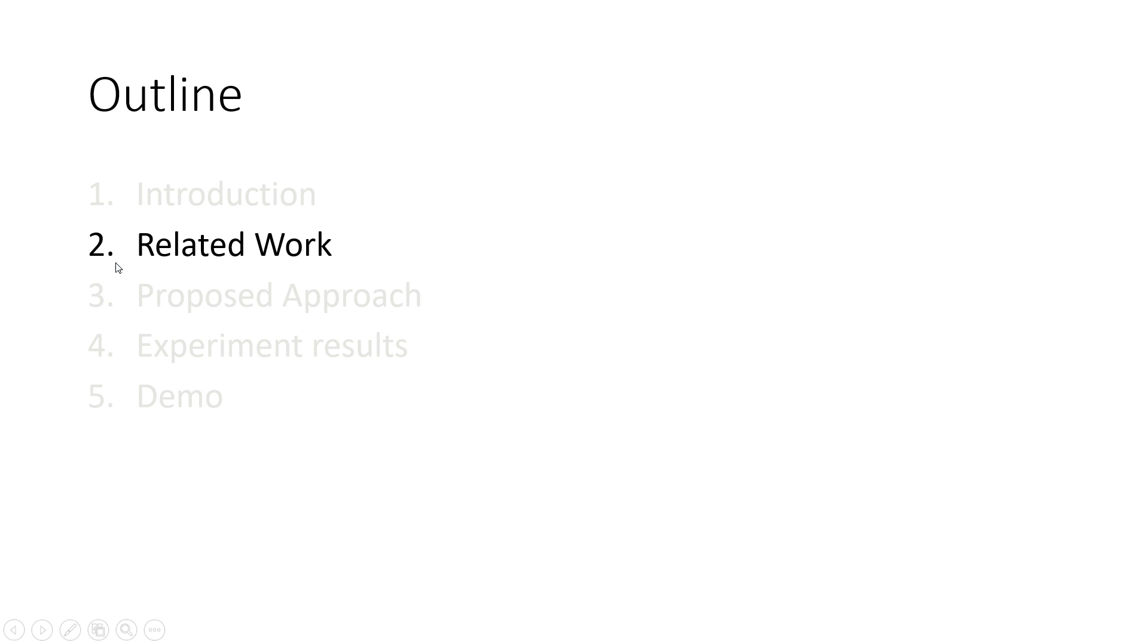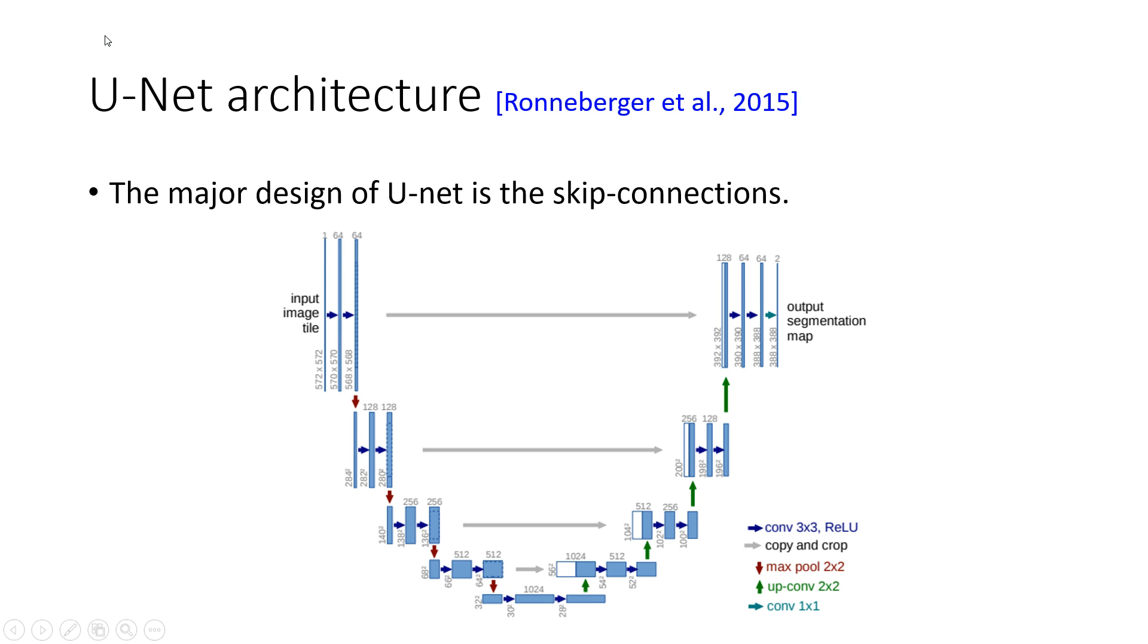I will introduce some related work which is used in our architecture. First, the U-Net architecture. The major design of U-Net architecture is skip connections. Skip connection is first used in image segmentation problems. It passes the output of the encoder through the corresponding decoder input. It wants to capture both the local and global information of the image. We hope that this architecture can help us improve the audio quality.